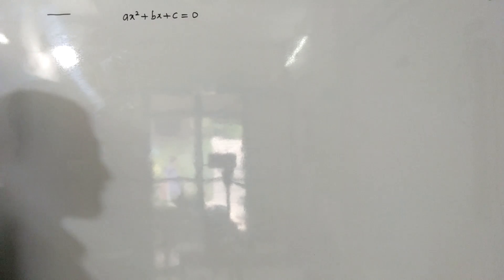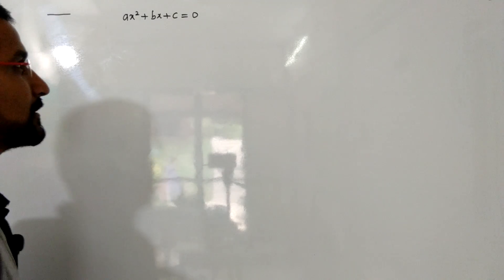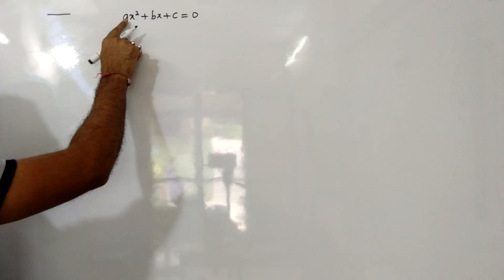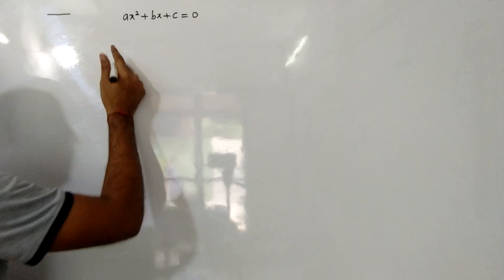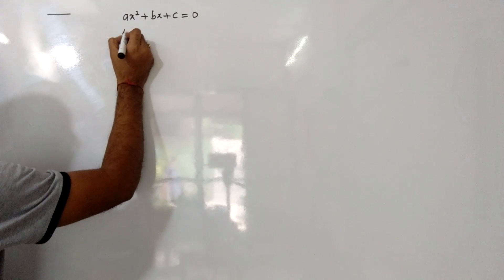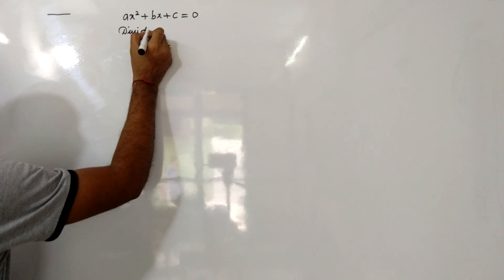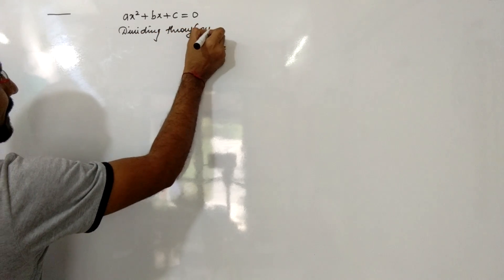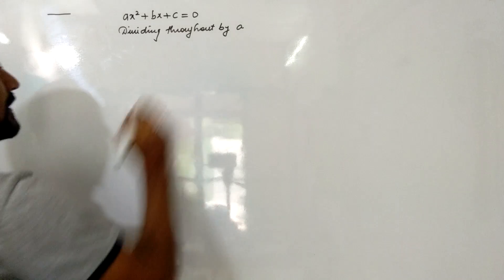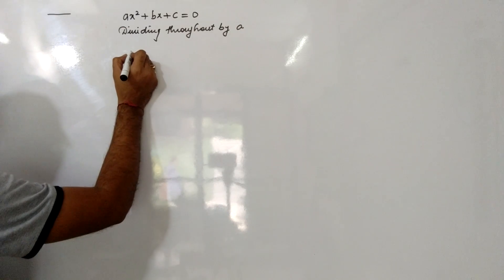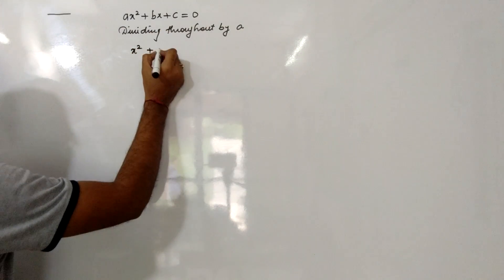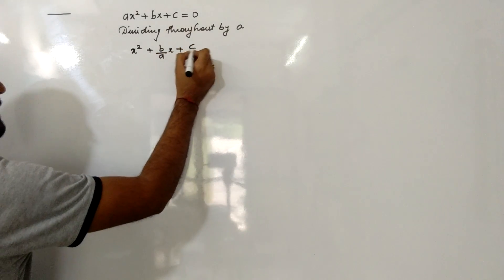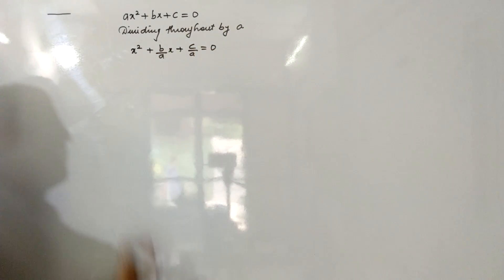As we have seen in the completing square method, the first thing is that the coefficient of x² should be 1. But here it is a, so we will divide throughout by a. If we divide by a, the equation becomes x² + (b/a)x + c/a = 0.